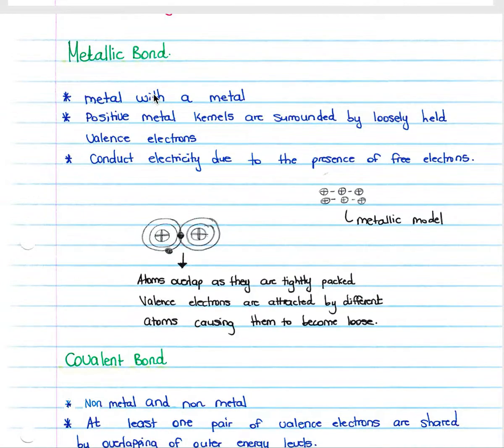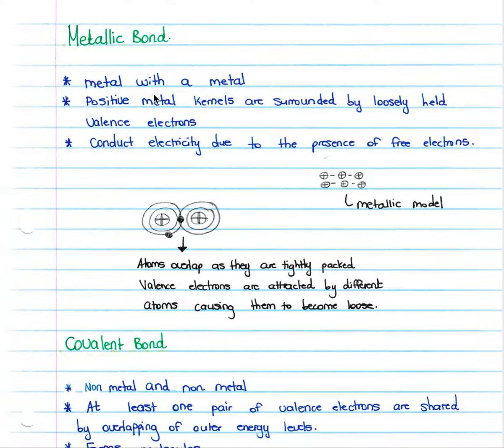Firstly, when we look at the metallic bond, we know it is a metal with a metal, so it's two metals bonding with each other. We have positive metal kernels that are surrounded by loosely held valence electrons. This is indicated in our metallic model where we have our positive metal kernels and our sea of delocalized electrons indicated by our negative charges over here. A metallic bond conducts electricity due to the presence of free electrons.